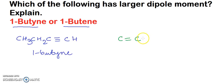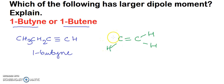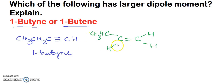For 1-butene, you have a double bond on the first carbon atom. You can draw the structures with hydrogen and carbon atoms present in the compound, giving CH3. There are four carbon atoms in both, but 1-butyne is an alkyne with a triple bond, while 1-butene has a double bond on the first carbon atom.